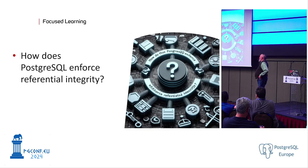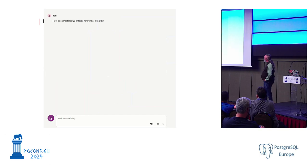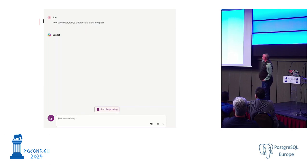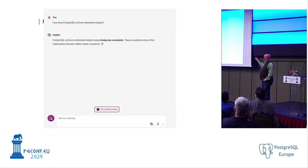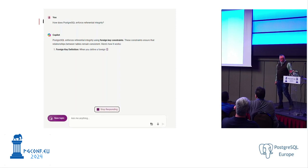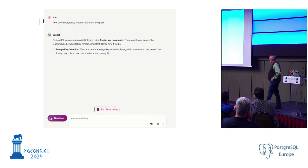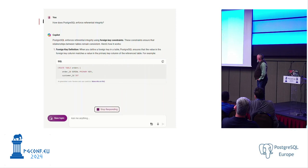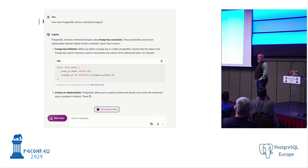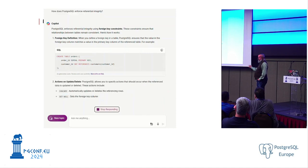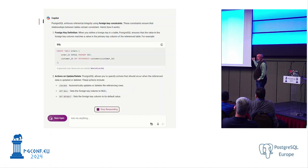Focus learning. How does Postgres enforce referential integrity? I'm trying to learn. Microsoft Copilot — that's going to give me an answer. I'm just going to let you read the answer. I didn't speed up anything, this is all real time. And it's literally telling me how does it enforce referential integrity, rolling through and describing it pretty well. If anyone has any major disagreements, let me know. I think it's pretty accurate based on my knowledge.